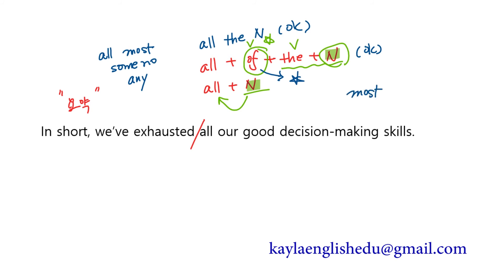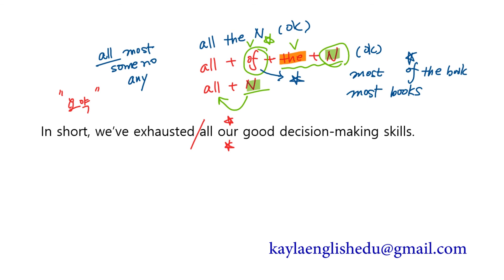most books — 대부분의 책들, 그런데 most books 앞에 the가 들어가면 most of the books라고 써야 해요. all은 of를 생략할 수 있어요. 소유격이 들어가도 똑같아요 — all our good decision making skills: our라는 소유격이 들어가 있으니 all our good decision making skills, 우리의 모든 좋은 결정을 하는 기술을 우리는 다 써버렸다는 결론입니다.